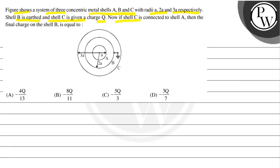Shell B is earthed and shell C is given a charge capital Q. Now, if shell C is connected to shell A, then the final charge on shell B is equal to minus 4Q upon 13, minus 8Q upon 11, minus 5Q upon 3 or minus 3Q upon 7.